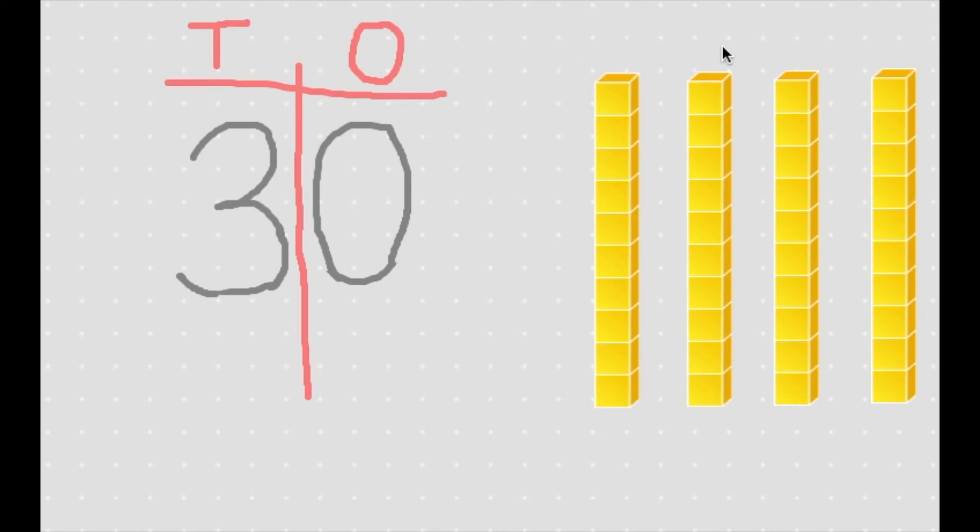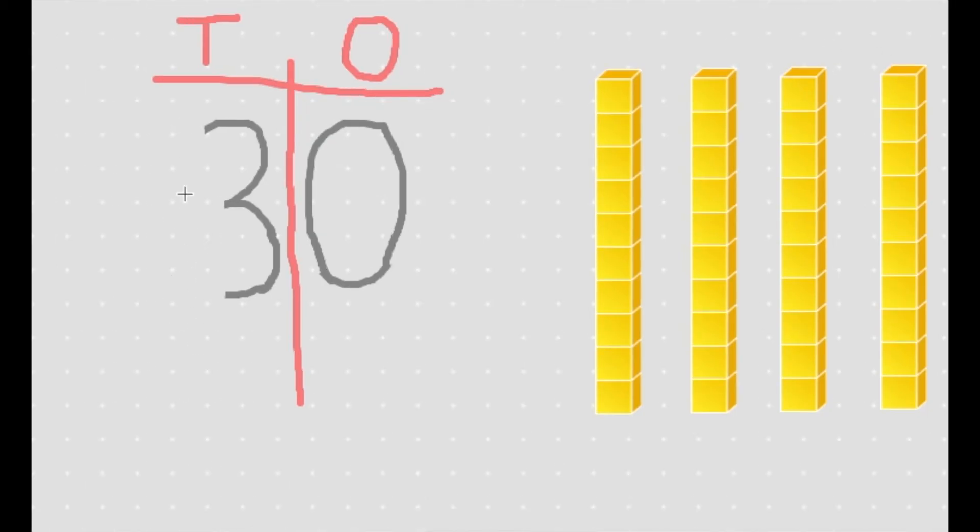10, 20, 30, 40. The number is 40 and we have one, two, three, four tens. Instead of a three in the tens place, we now have a four in the tens place because we have four longs. What about the ones place? Does that need to change? We still don't have any cubes so the zero in our ones place can stay. Now we can see that when you add 10 to a number, the ones place stays the same. It's only the tens place that changes.